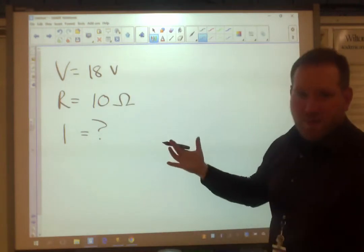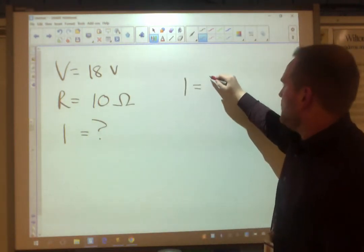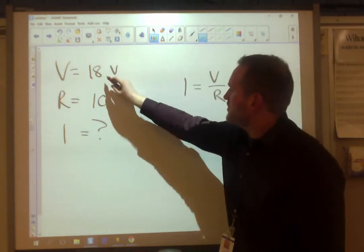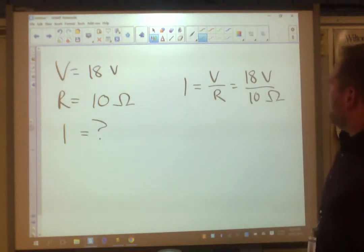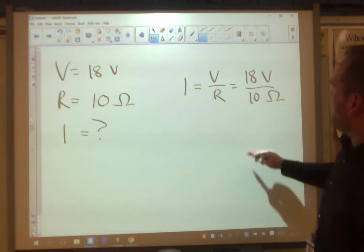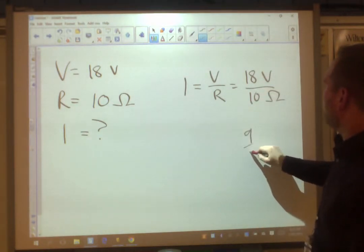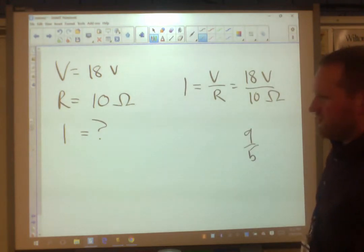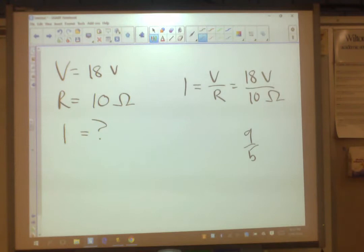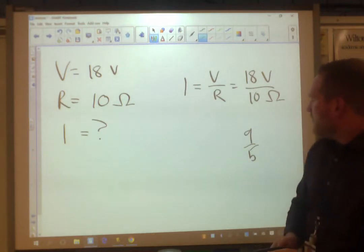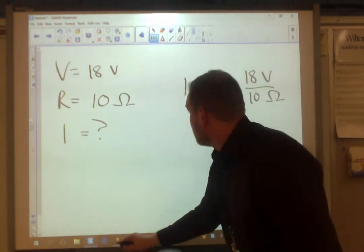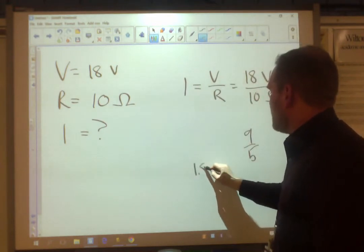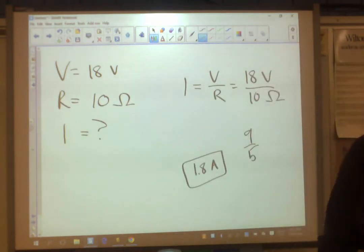How much current is flowing through the wire? This is my favorite way to express Ohm's Law. Current equals volts over resistance, which equals 18 volts over 10 ohms. Let me try it without a calculator. That's going to be 9 fifths. Let me just get a calculator. Yeah, 1.8. 1.8 and the unit for current is amps, 1.8 amps.